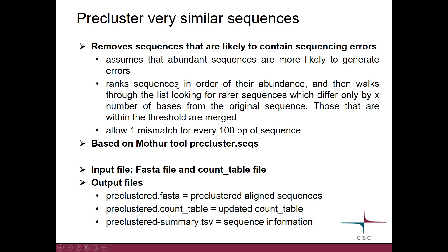It ranks the sequences in order of abundance and then walks down the list looking for rarer sequences which differ only by a certain number of bases from the original sequence. This number is a parameter that we need to decide — typically we allow one mismatch for every hundred bases of sequence. Those sequences which differ only by that much are then merged.